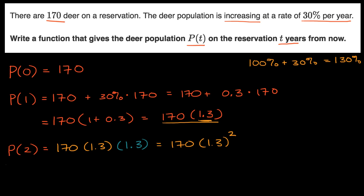And so I think you see where this is going. If we wanted to write a general P(t), so if we just want to write a general P(t), it's going to be whatever we started with, 170. And we're going to multiply that by 1.3, however many times, however many years have gone by.